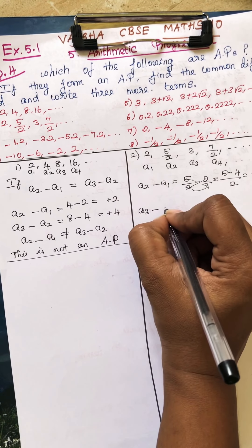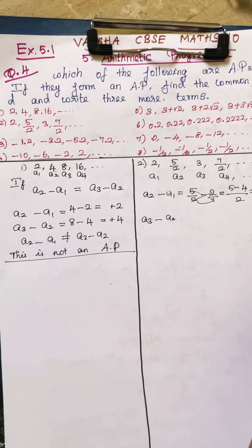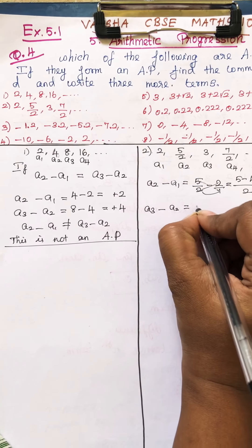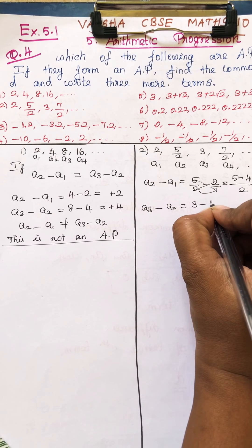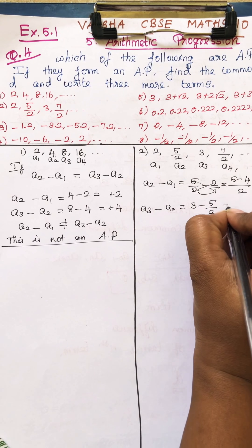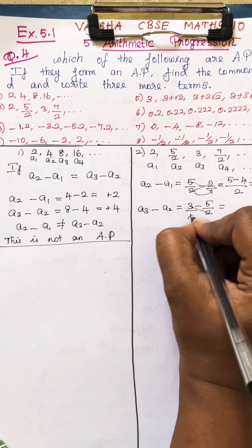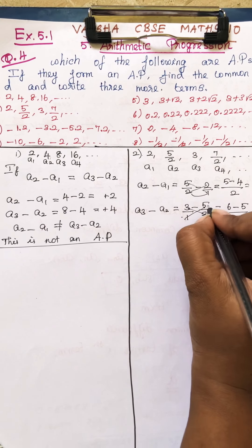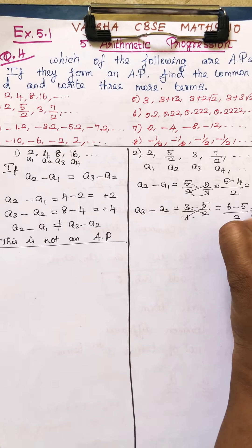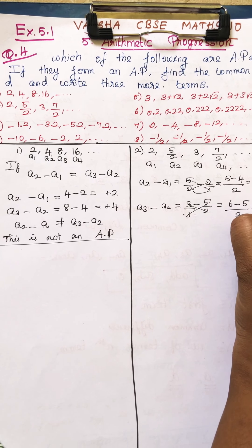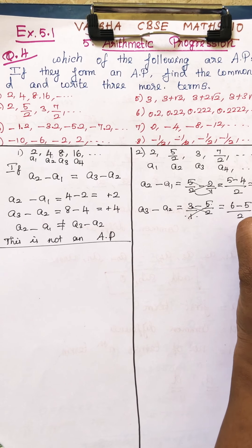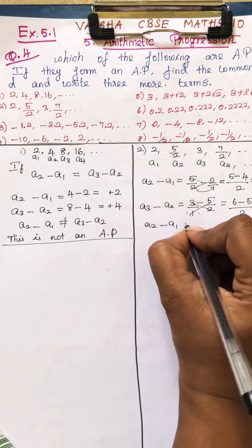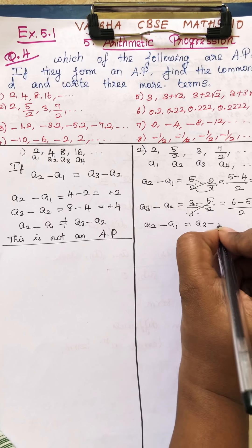Now find A3 minus A2. A3 is 3 minus A2, which is 5/2. Cross multiply: 6 minus 5 over 2, that is 1/2. So A2 minus A1 is equal to A3 minus A2. Both are equal.